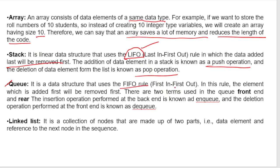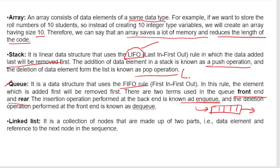Queue uses the FIFO rule — First In First Out. The element which is added first will be removed first. There are two ends in a queue: front end and rear end. The insert operation performed at the back is known as enqueue, and the deletion operation performed at the front is called dequeue. So data is inserted from the back and deleted from the front.